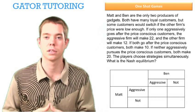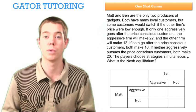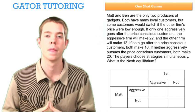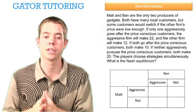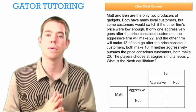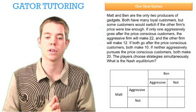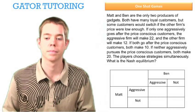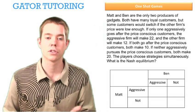We want to draw a game box to answer this question when we have a simultaneous move game. We put Ben on top, Matt on the side, and we have the actions of either guy — we can either be aggressive or not. So let's start reading through that paragraph.